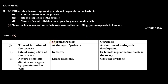Here is the Part A difference between spermatogenesis and oogenesis. First point mein hume time of initiation of both processes ke basis pe difference batana tha. Jo spermatogenesis hota hai woh start hota hai puberty pe, aur oogenesis start ho jata hai embryonic development ke time. So spermatogenesis starts at the age of puberty, and oogenesis at the time of embryonic development.